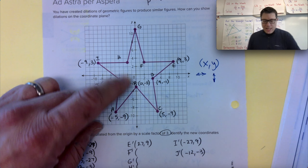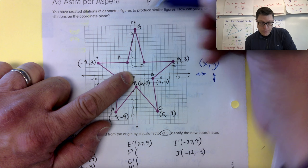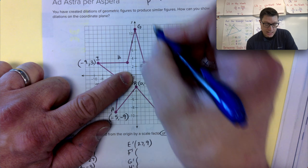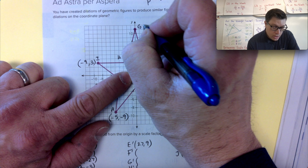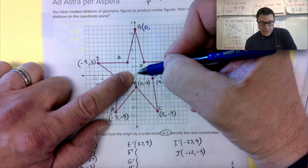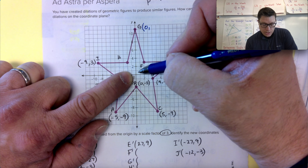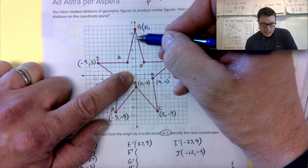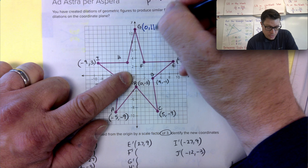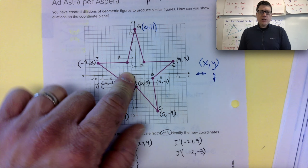We can use that logic to find the coordinate of G. We're not traveling left or right at all, so the first number is zero. Then we travel up from the origin: one, two, three, four, five, six, seven, eight, nine, ten, eleven — which means our second number, our up and down, is eleven. So G is (0, 11).